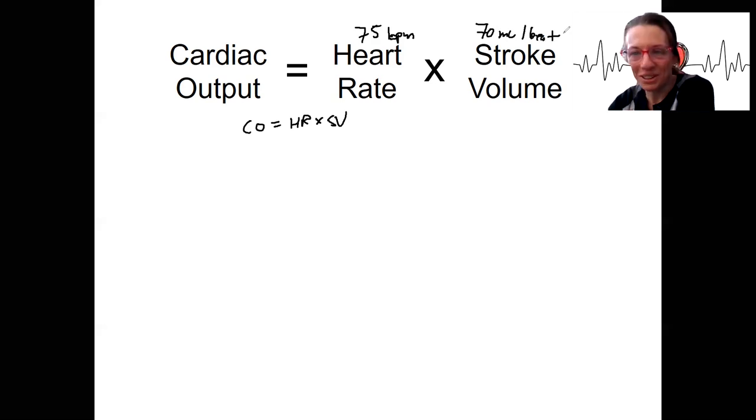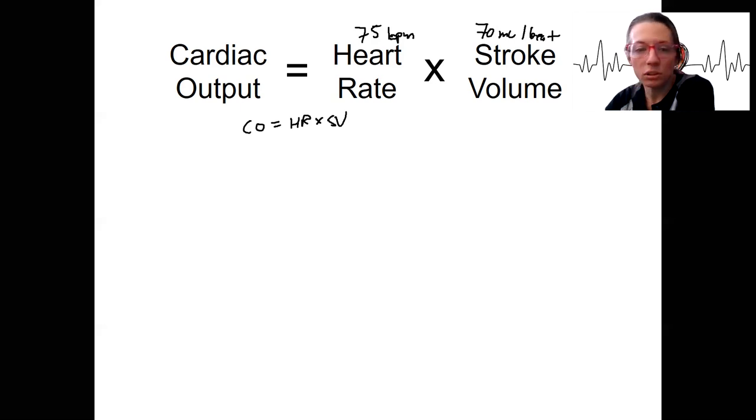These both vary depending on what you're doing, and that's important. We want cardiac output to be able to change. You know your heart rate changes when you exercise. So does stroke volume, and therefore cardiac output. So for this individual with normal resting values, what's their cardiac output?